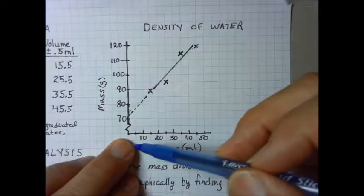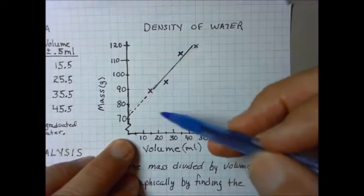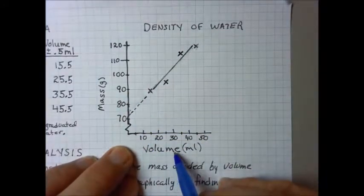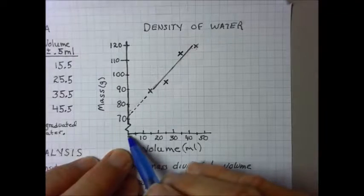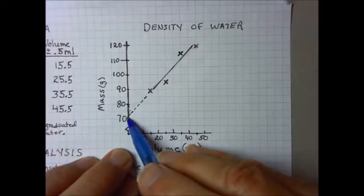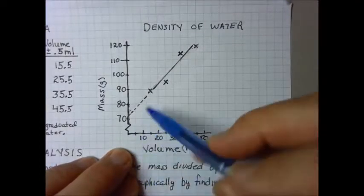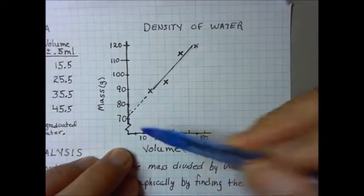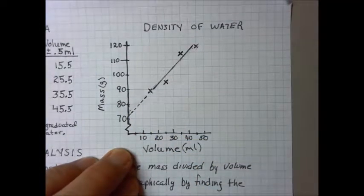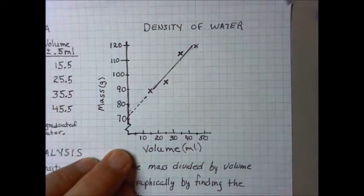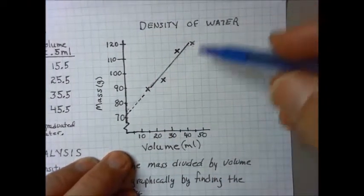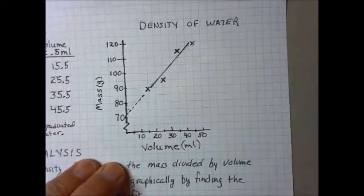So when there was no water in the graduated cylinder, there was still some mass associated with that graduated cylinder. In fact, by looking at the graph, it looks like it was about 72 grams. And that just, that makes sense. But anyway, this is what a good graph looks like.